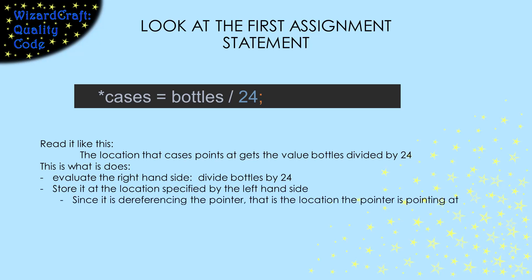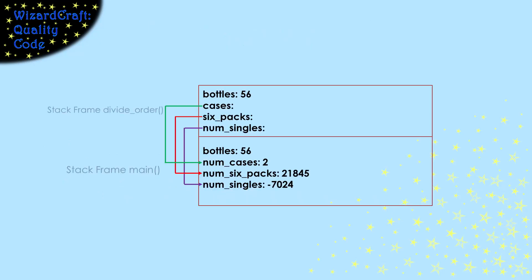However, when it goes to store it at the variable on the left-hand side, that dereference operator tells us to store it at the position pointed to by the cases variable. Now remember, we saw that cases pointed to the num_cases variable in main, so this assignment operator is going to store into the num_cases variable in main. When that statement is completed, our memory will look like this. Notice that num_cases in main now has the value 2. So code inside divide_order changed the value of a variable in main's stack frame. Magical pointers.